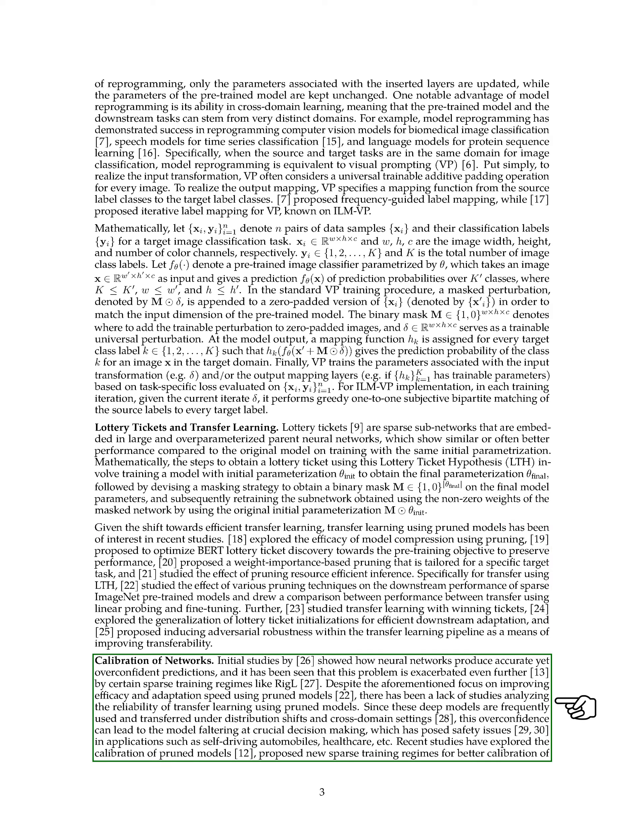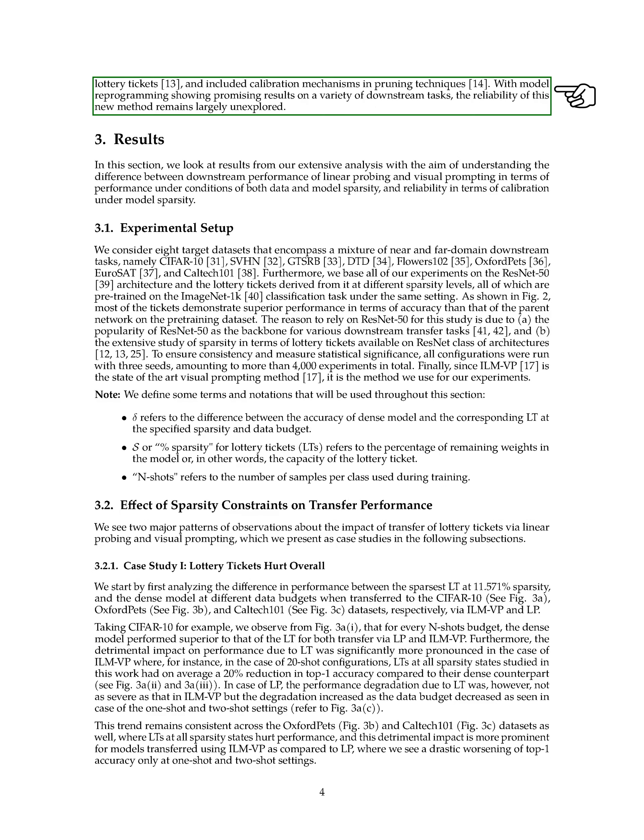Lastly, let's discuss the calibration of networks. Initial studies have shown that neural networks often produce accurate but overconfident predictions, a problem that can be exacerbated by certain sparse training regimes. Despite the focus on improving efficacy and adaptation speed using pruned models, there has been a lack of studies analyzing the reliability of transfer learning using pruned models. This overconfidence can lead to the model making crucial mistakes, posing safety issues in applications such as self-driving cars and healthcare. Recent studies have explored the calibration of pruned models and proposed new sparse training regimes for better calibration of lottery tickets.